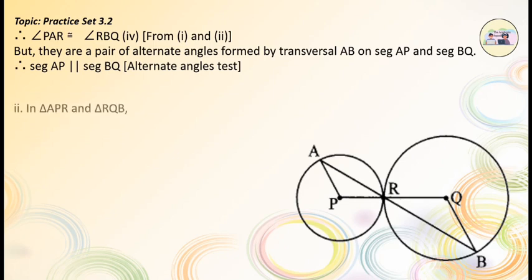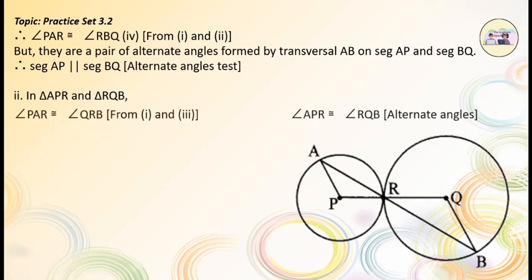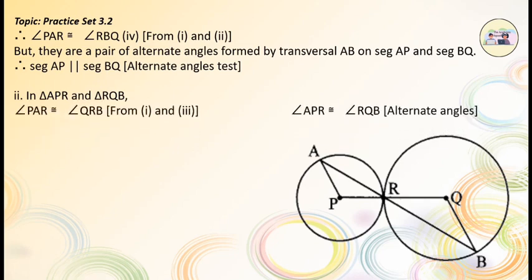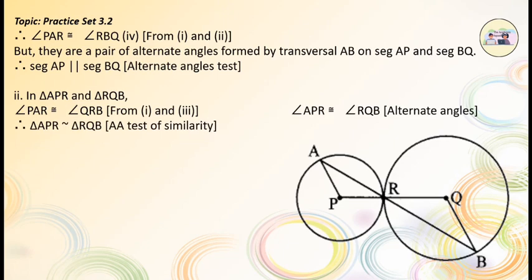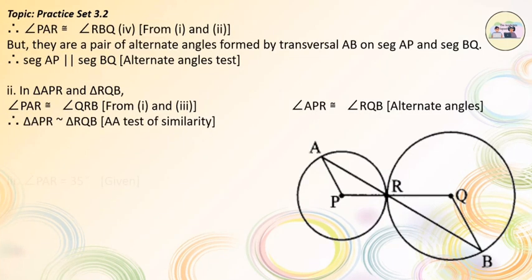In triangle APR and triangle RQB: angle PAR is congruent to angle QRB, from equations 1 and 3; angle APR is congruent to angle RQB, alternate angles. Therefore, triangle APR is similar to triangle RQB by the AA test of similarity.